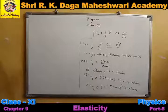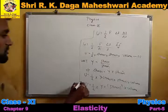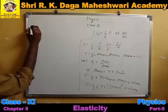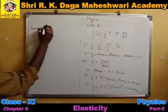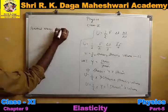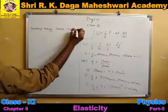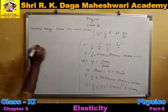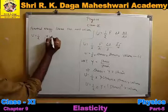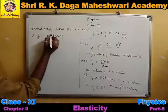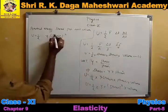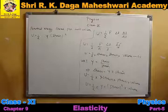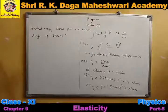For potential energy stored per unit volume, we divide the total potential energy by volume. When we divide by volume, the volume terms cancel and we get: potential energy per unit volume equals half into Y into strain squared.